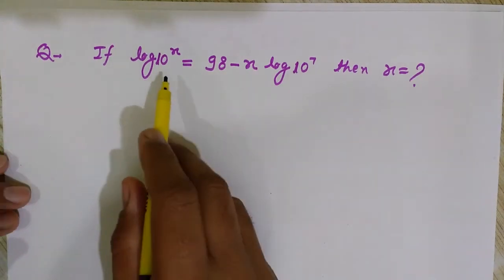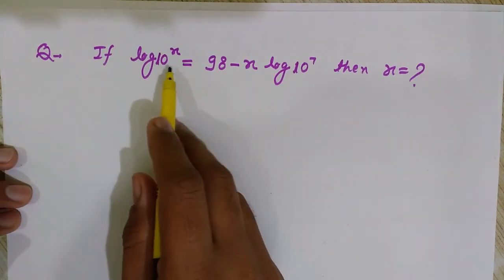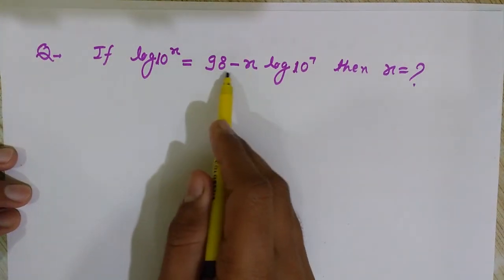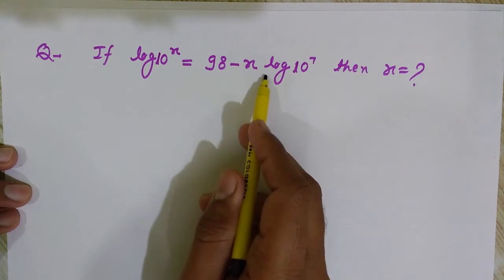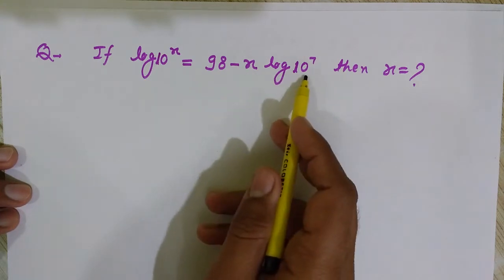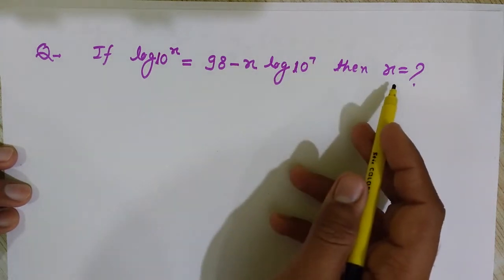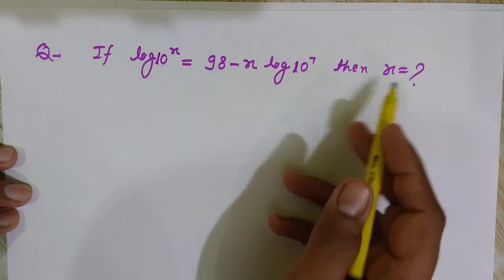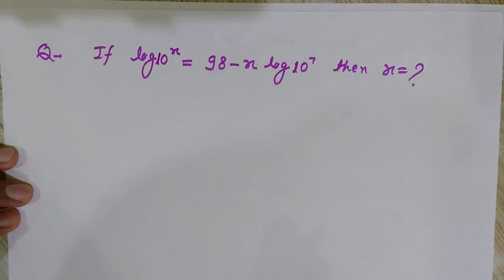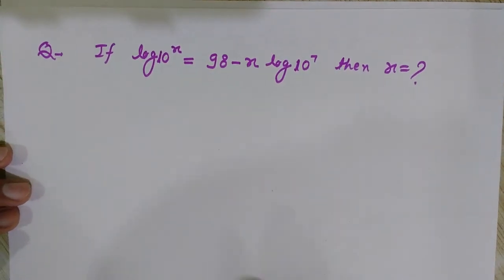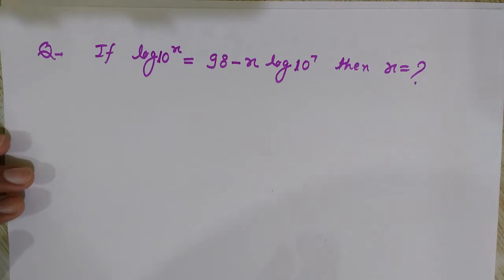Now we will see another problem. If log of 10 to the power x is equal to 98 minus x times log of 10 to the power 7, then find the value of x. It is again a simple problem we can solve easily by using these formulas.